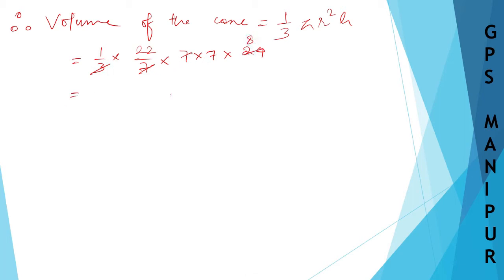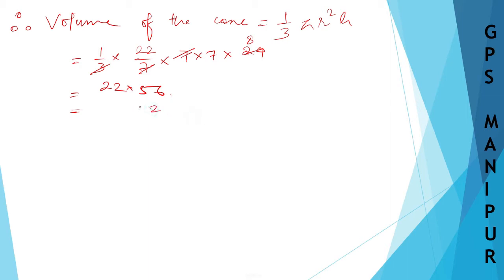Simplifying: 7 and 7 cancel with the denominator, and 24 divided by 3 gives 8. So we get 22 × 7 × 8 = 22 × 56 = 1232. The volume is 1232 cubic meters.